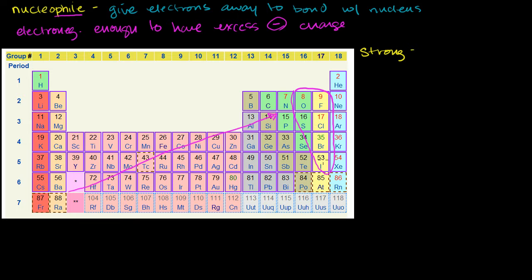So these are potential nucleophiles, but which are going to be strong versus medium versus weak? Remember, a nucleophile really wants to give away electrons, and electronegativity means you want to hog electrons. So in order to even be a nucleophile, you have to be electronegative enough to have excess negative charge. But the strongest nucleophiles are the ones that can be a nucleophile but aren't too electronegative — they still want to give away electrons. Which of these is the least electronegative?